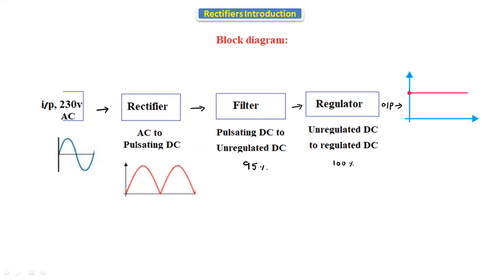In this session, we are discussing rectifiers only; filters and regulators will be discussed later. To summarize the block diagram: 230 volts AC input goes to the rectifier, which converts it to pulsating DC. Pulsating DC goes to the filter, producing unregulated DC at about 95 percent. That then goes to the regulator, which gives 100 percent regulated DC.